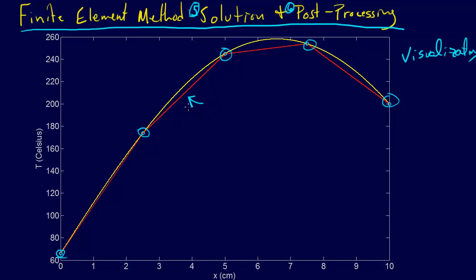We did stick with the linear shape functions just for solving it with the finite element method. But as a post-processing step, we could fit a cubic spline to this data or whatever else. So we're not stuck with a linear spline or anything like that — we can use whatever we want to smooth the data afterwards, and a lot of times you will.